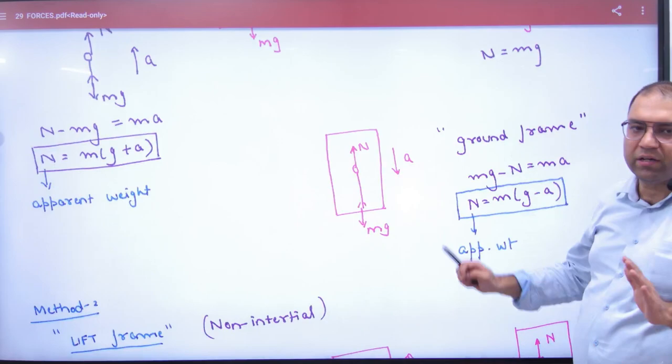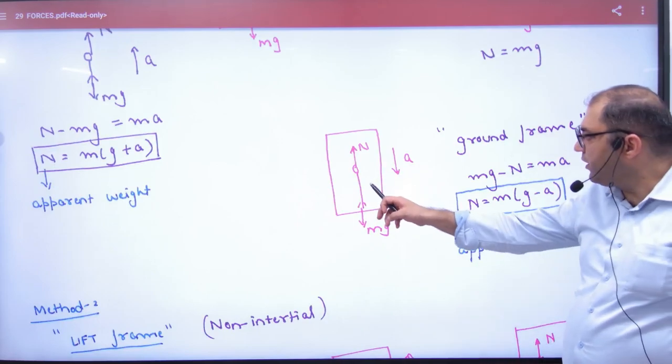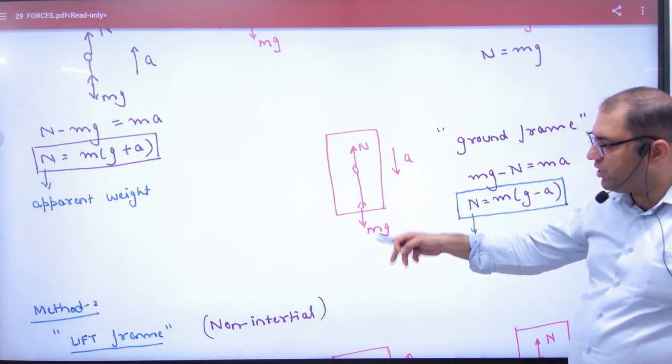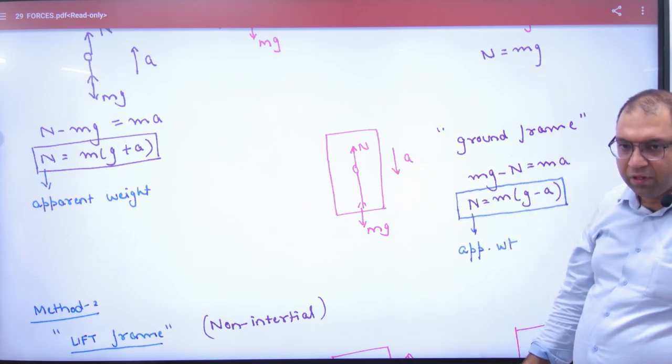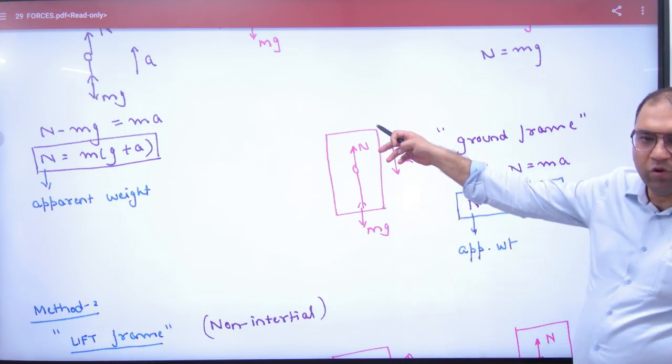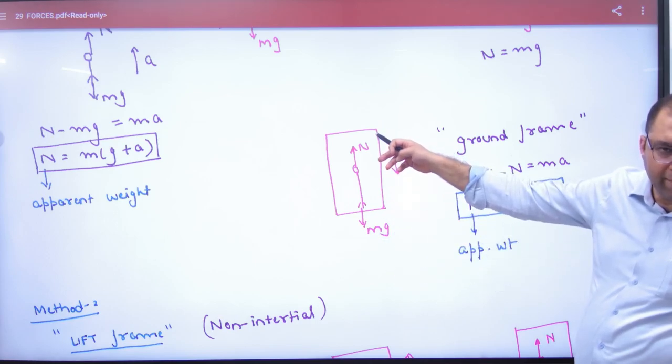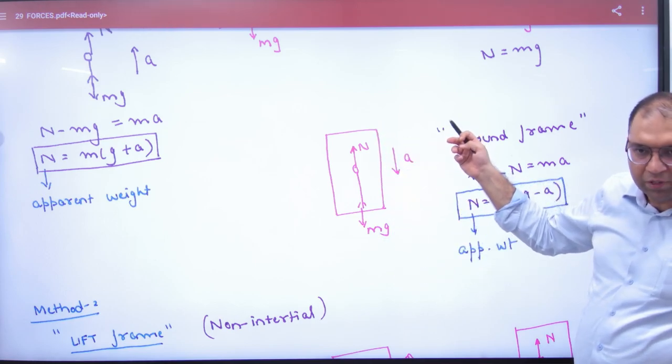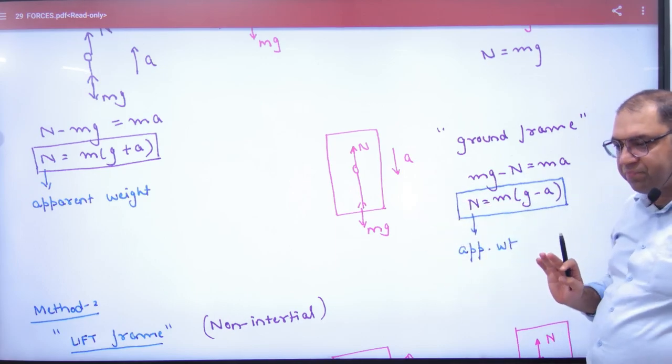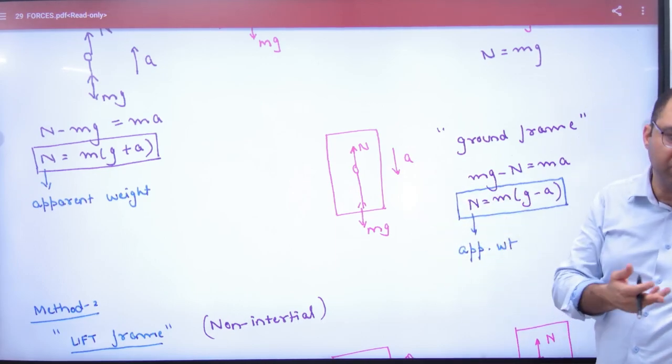If you think lift is going down, then if we draw the free body diagram, Mg is down and N is up. Because this object is down, Mg force is big and N force is small. So Mg minus N is equal to Ma. So here N can be calculated. Apparent weight or normal reaction will be M(g - a).